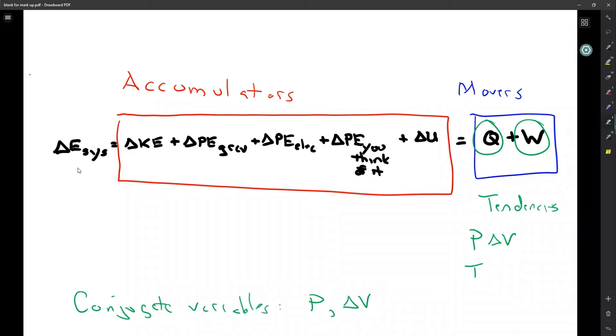But conjugate variables are an intensive property that's the tendency, so to speak, the direction of change, and then an extensive property, which is the magnitude of that change. When you multiply the two together, you get a joule term, which is then either a heat interaction or work interaction, and shows up on the other side of the equal sign in the accumulators as some type of our abstract concept of energy.